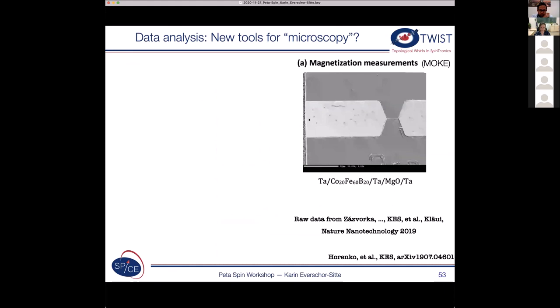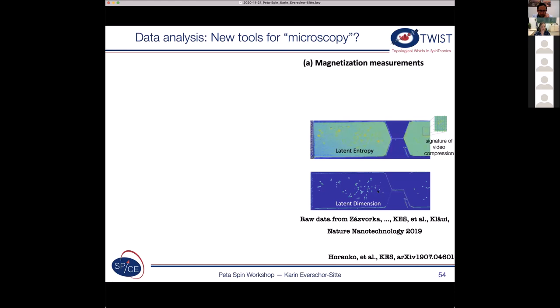So now the last part, the experiments. We looked at MOKE data, and here's the experiment. So you see some fluctuations of these skyrmions. So these are raw data from this skyrmion reshuffler paper. And when we look at them with our latent entropy and latent dimension, we can observe that there are inhomogeneities in the sample, either coming from impurities or maybe you see a little bit of a color gradient in this latent entropy might allude to a temperature gradient that is present.